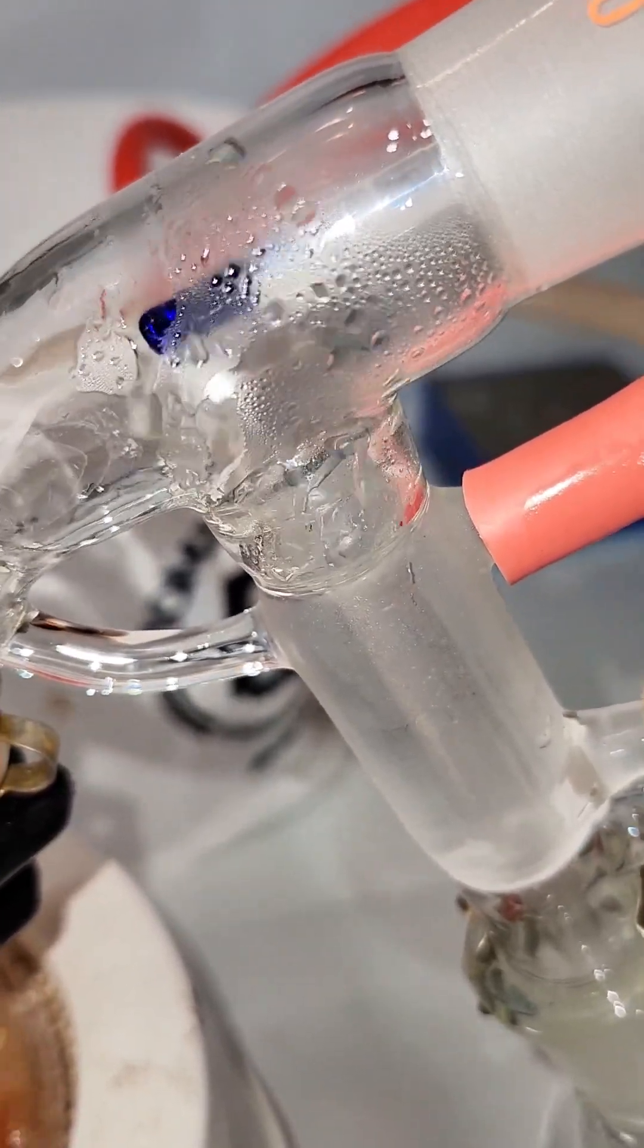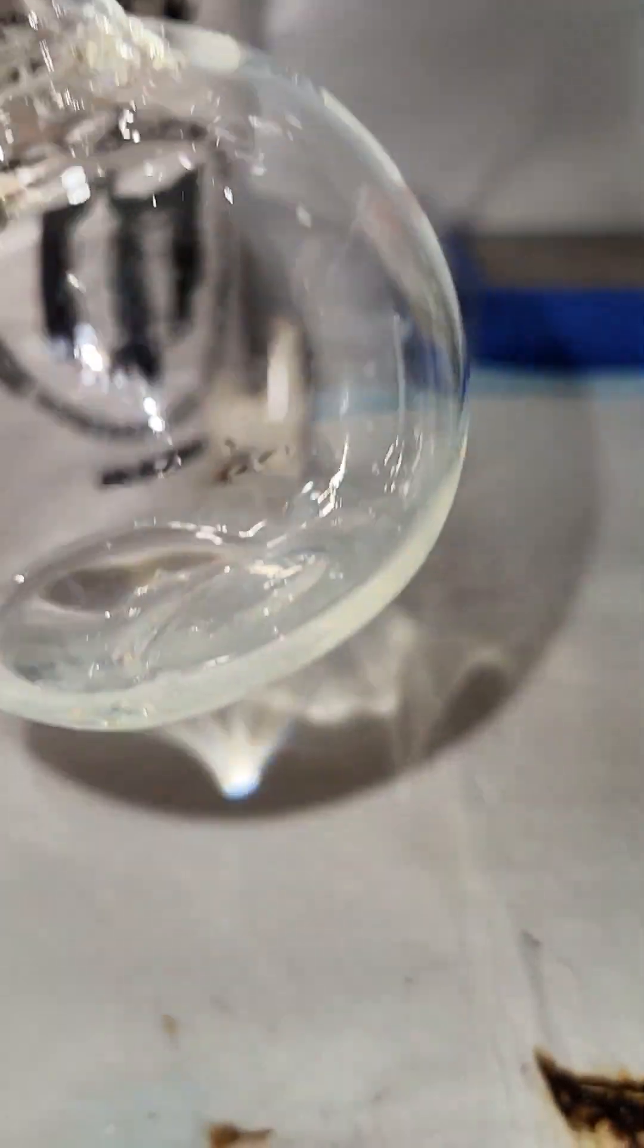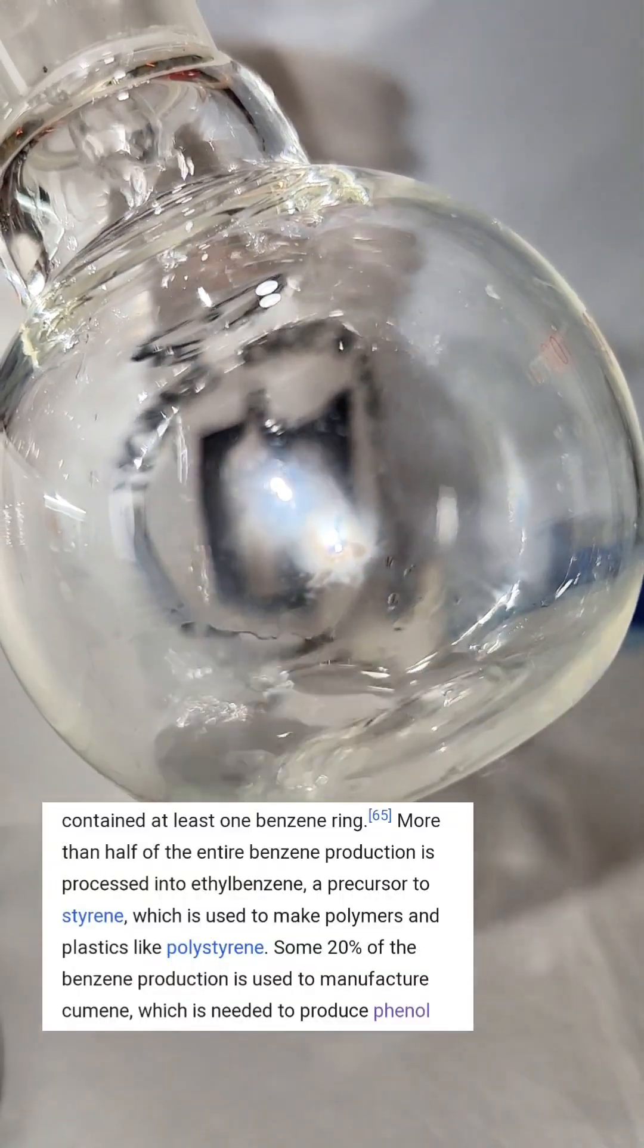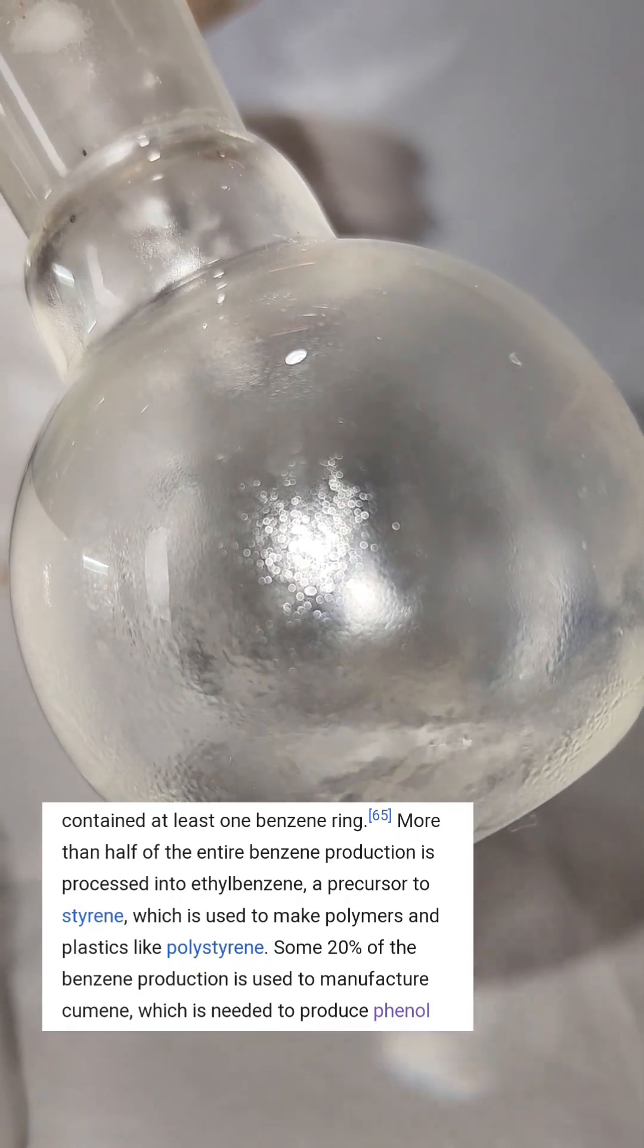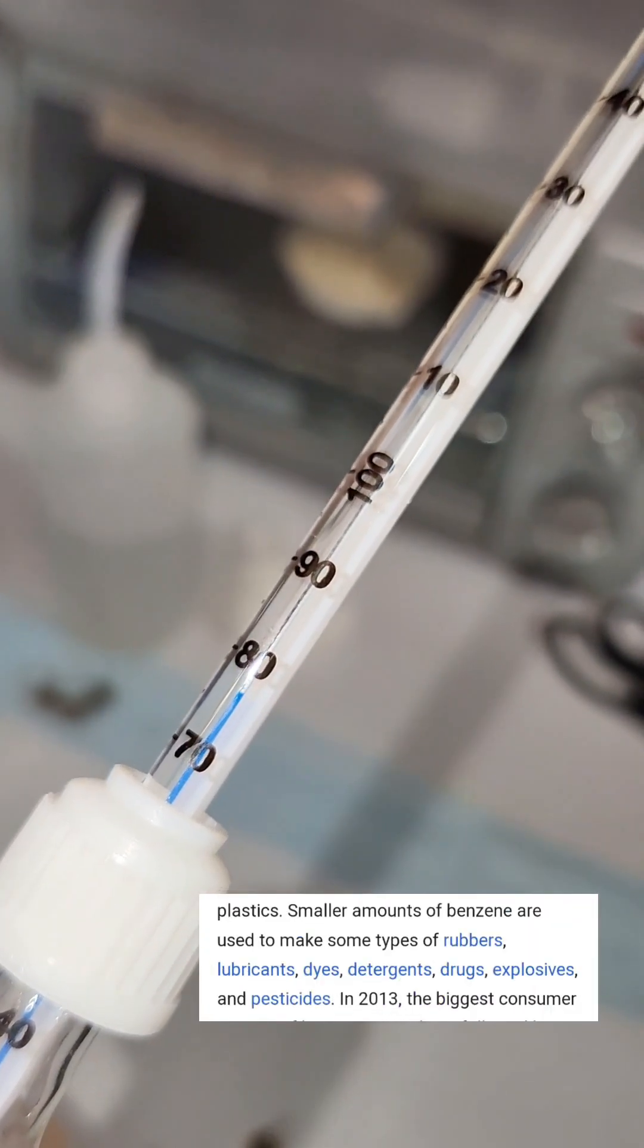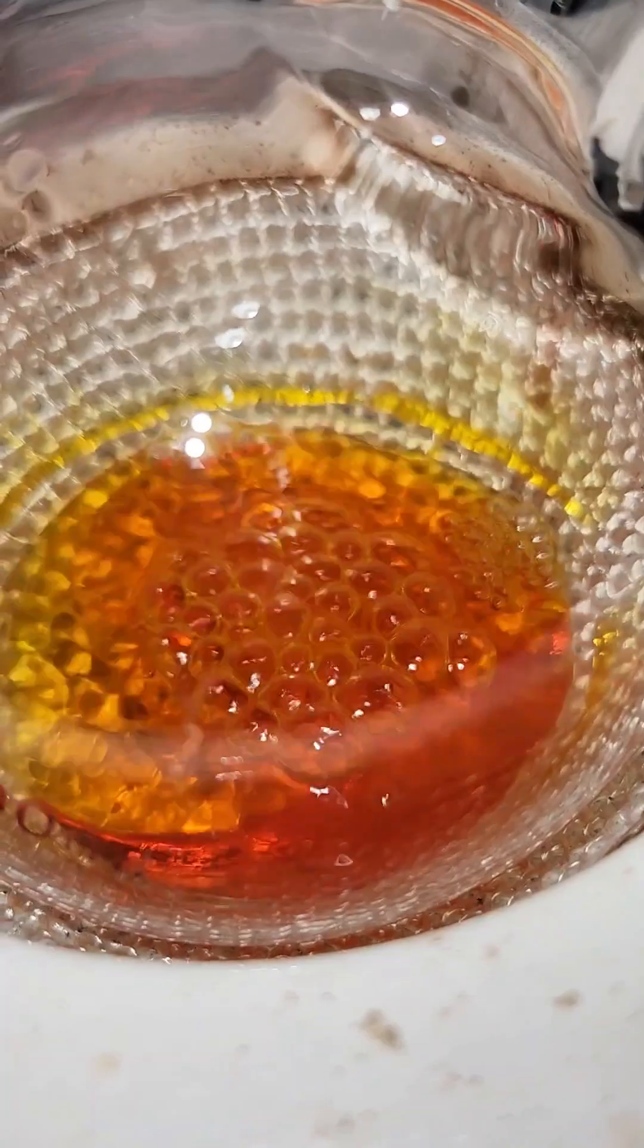I also just realized I never actually said why I was making benzene or what it's used for. To clear that up, most benzene is used to make polystyrene, but it's also a critical organic building block for the synthesis of many different pharmaceuticals, munitions, textiles, dyes, you name it.